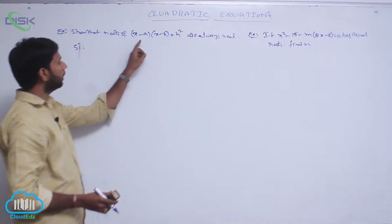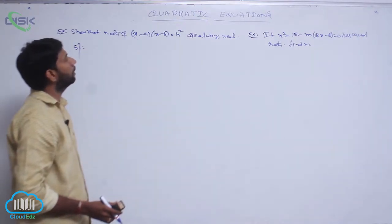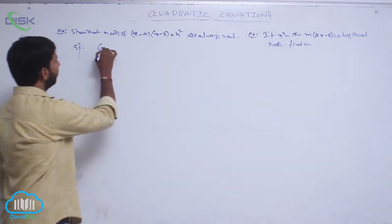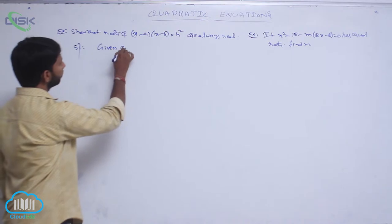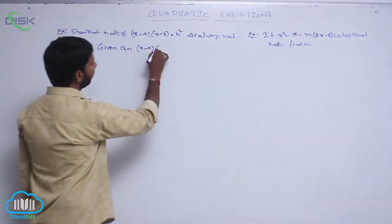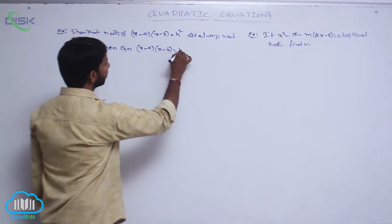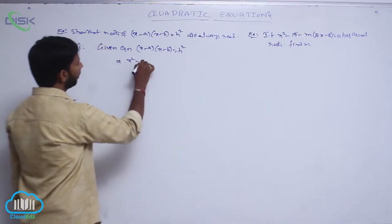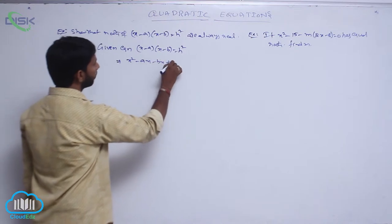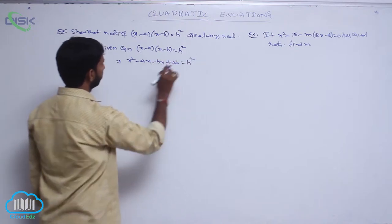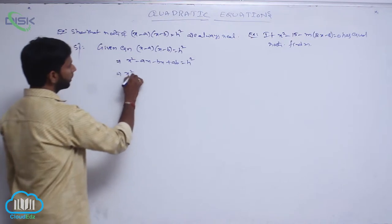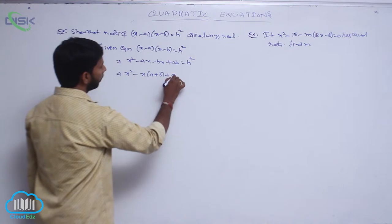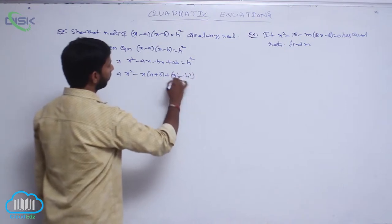Show that the roots of the equation (x minus a) into (x minus b) is equal to h square are always real. The given equation expands to x square minus ax minus bx plus ab equals h square, which implies x square minus (a plus b)x plus ab minus h square equals 0.